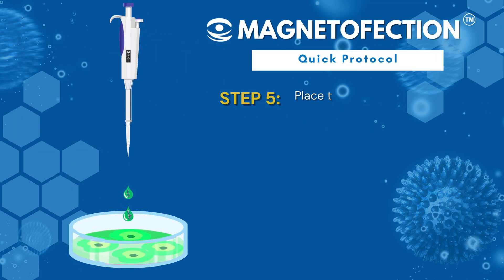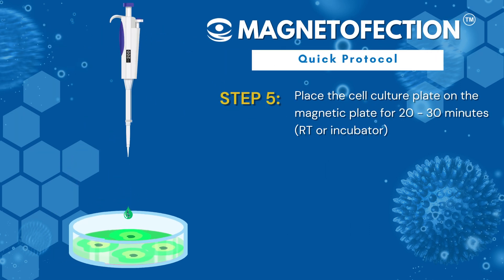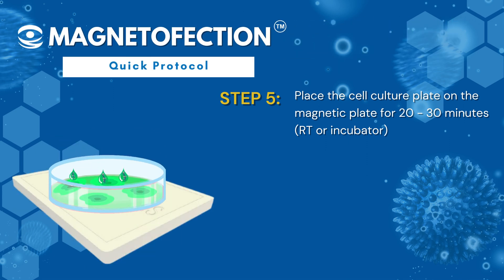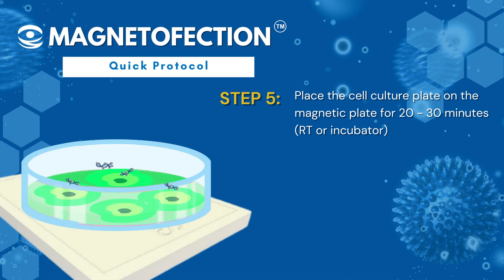Step 5: place the cell culture plate on the magnetic plate for 20 to 30 minutes at either room temperature or in the incubator.